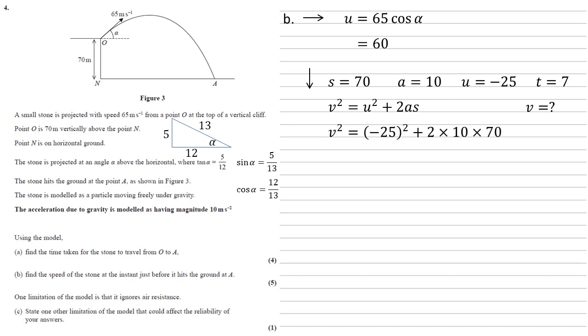So V squared equals U squared plus two A S. So we get that V squared equals negative 25, all squared, plus two times 10 times 70, which equals 2025. So square rooting this, we get that V is equal to 45.